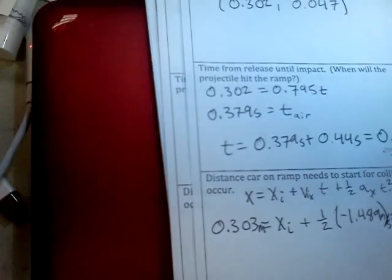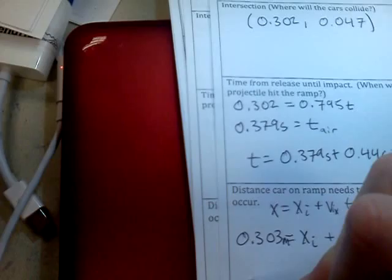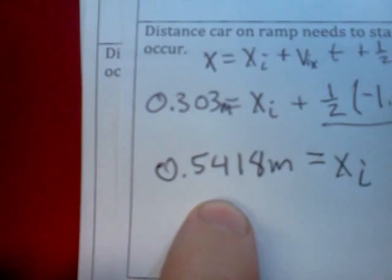So then I can go ahead and calculate that. I can solve for the x initial using algebra. And I'm just going to subtract all of this piece from this side, and that will give me my answer of 0.5418 meters is what my x initial needs to be.